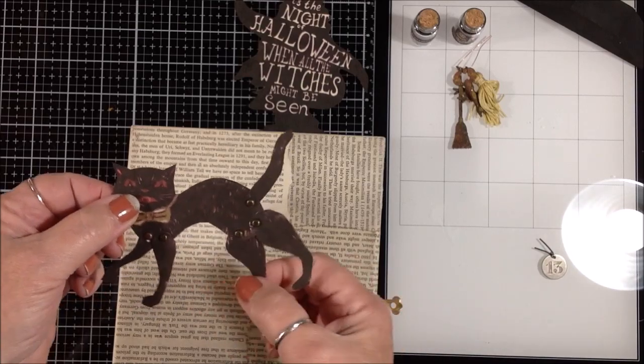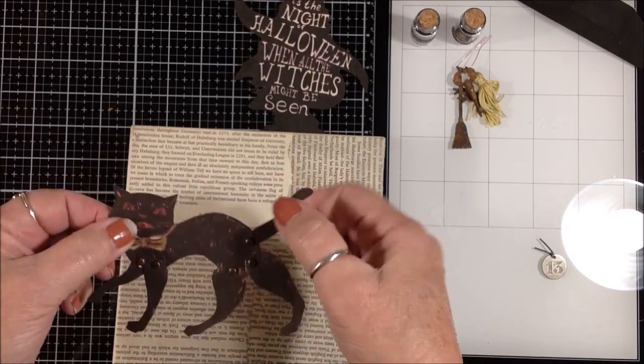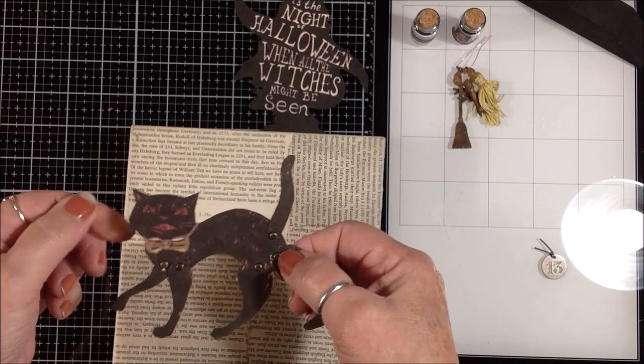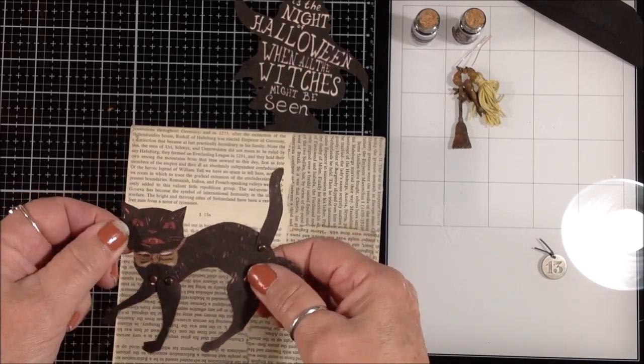I found this cool printable witch outline. It says 'tis the night of Halloween when all the witches might be seen.' And I just put a craft stick on the back so that I can glue that onto the back of the box, and when it stands up it will be standing up above the box. And then this vintage looking cat...